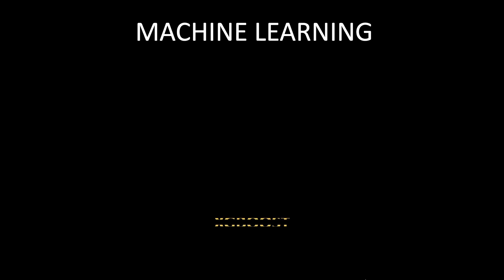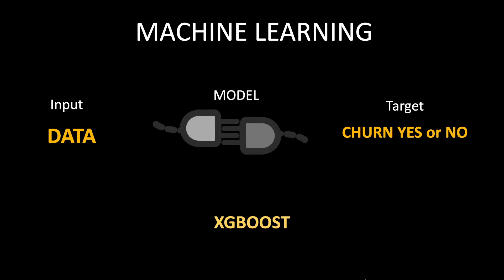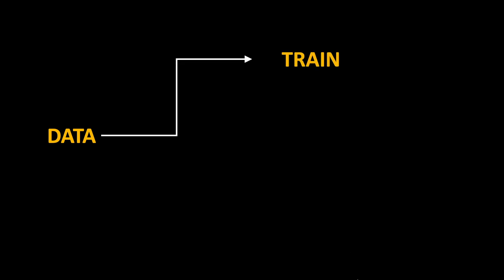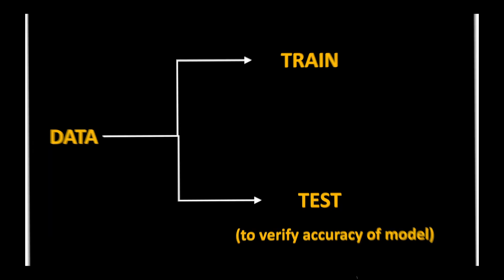Let us now go to the next step of training a machine learning model. There are various machine learning algorithms, and the one used here is called XGBoost. The model is trained using the dependent variables such as demographic fields, the type of services, and the billing fields, with the target variable being churn. The machine learning model will try to find a relation between the dependent variables and the target variable. The data is split into two: the training dataset and the test dataset. The training data is used to train the model and the test data is used to verify the accuracy of the model.